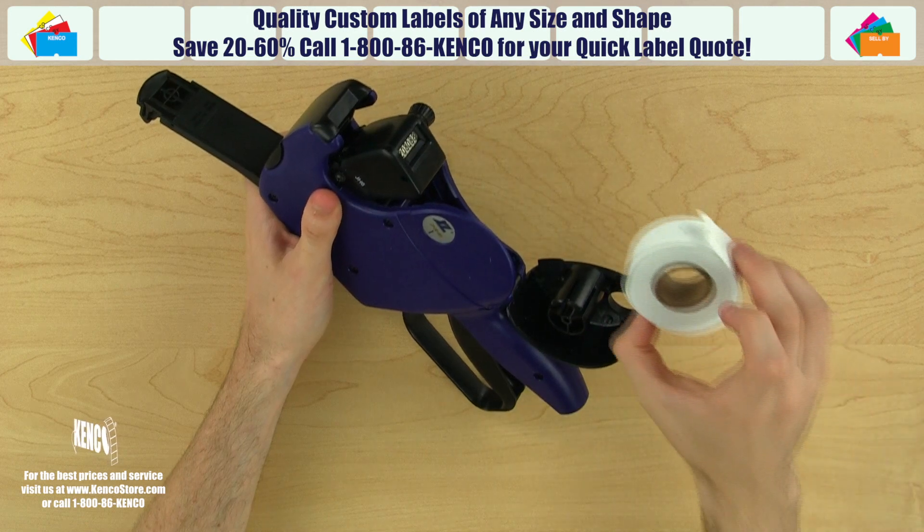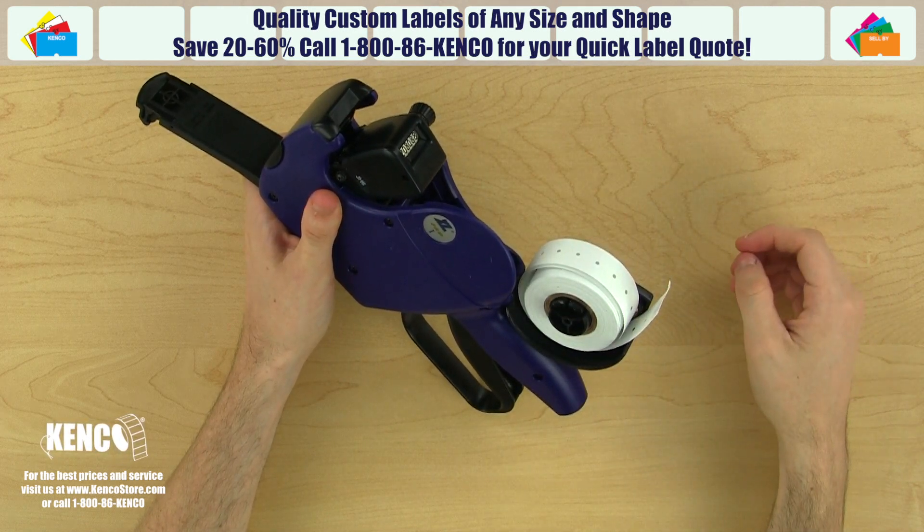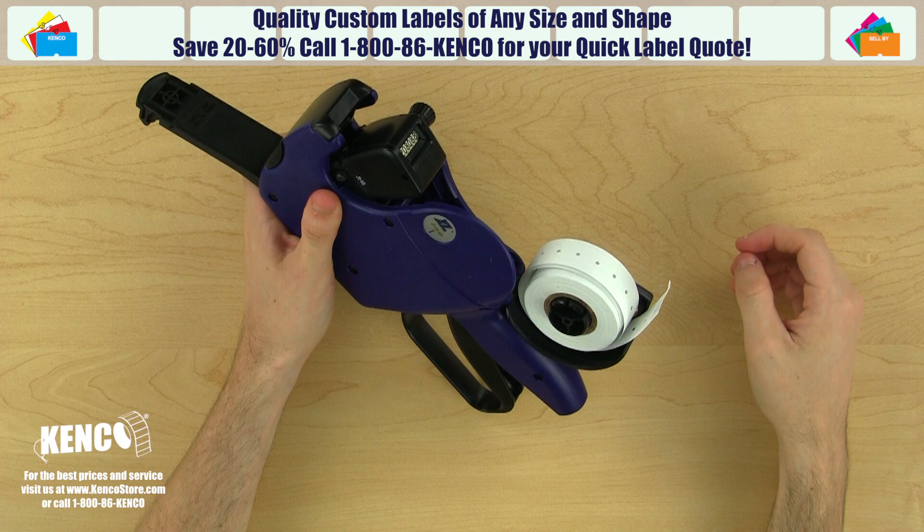Grab the roll of labels and place it on the shaft of the housing assembly in a counterclockwise direction. These blank labels in assorted colors can be custom printed with your information and are available through Kenco at KencoStore.com or by calling 1-800-86-Kenco.